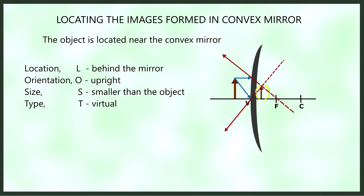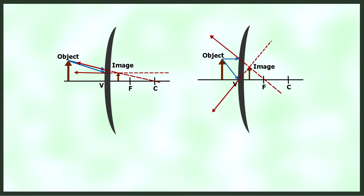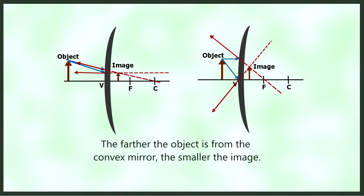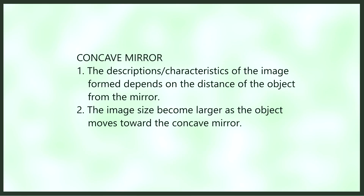So regardless of the object's location from the convex mirror, the image is always located behind the mirror, upright, smaller than the object, and virtual. However, comparing image sizes: the further the object is from the convex mirror, the smaller the image. For the concave mirror, the description of the image depends on the object distance from the mirror, and the image size becomes larger as the object moves towards the concave mirror.